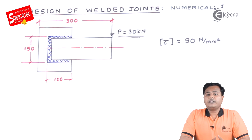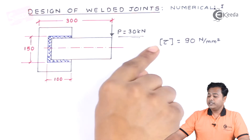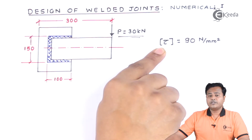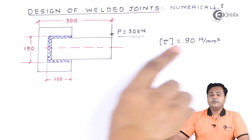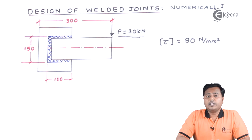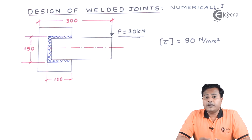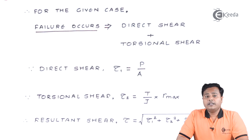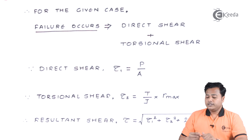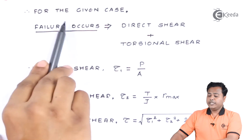There is one more factor given: the allowable value of shear stress, which is 90 Newton per millimeter square. This is the allowable value for the weld material. With these inputs, the very first thing to recollect is the failure mode of this weld section.